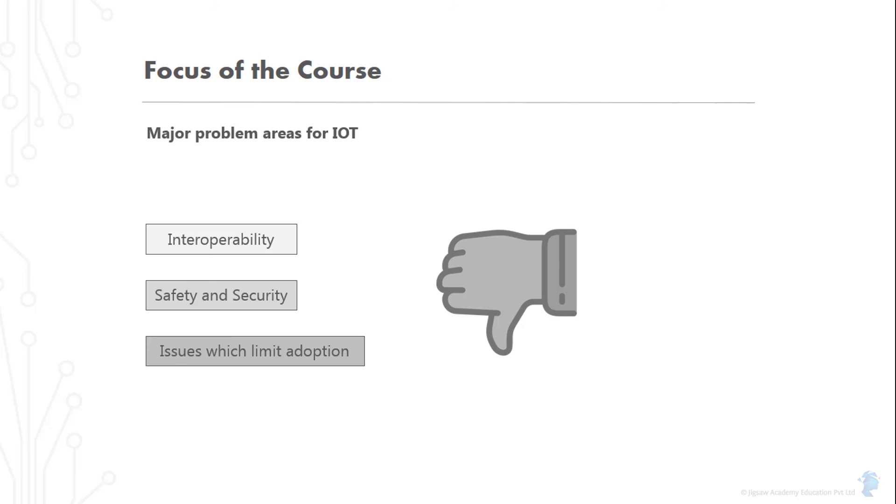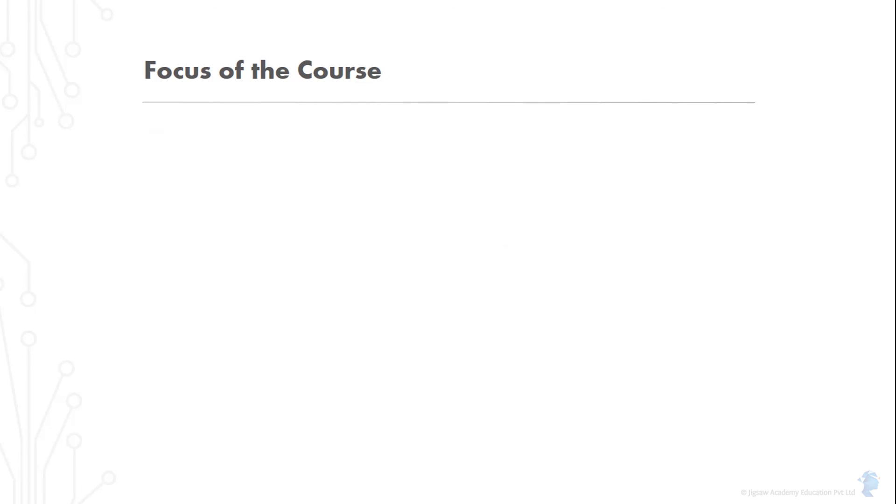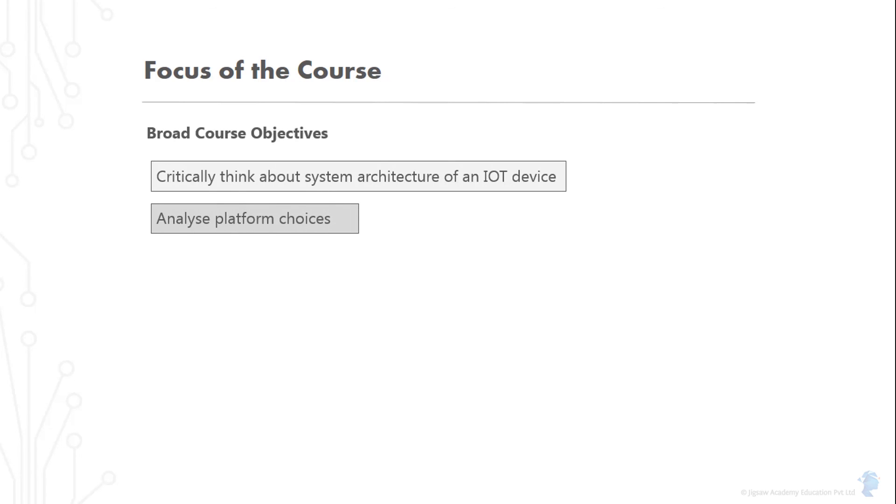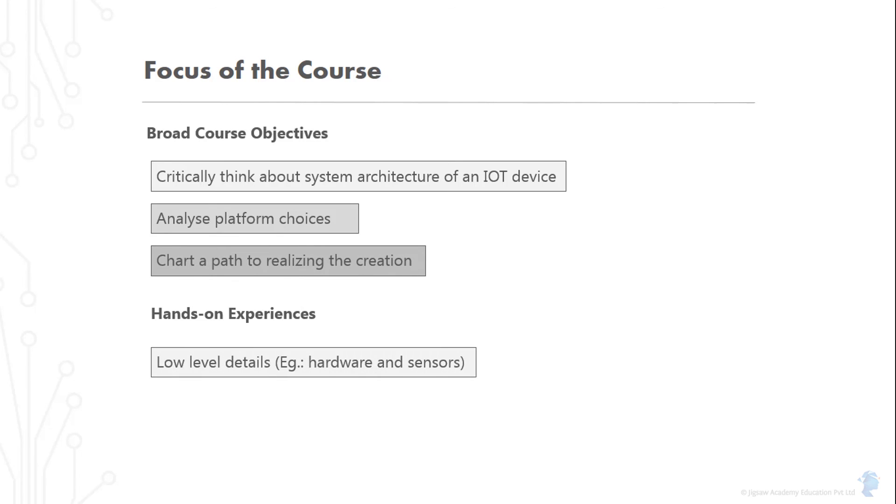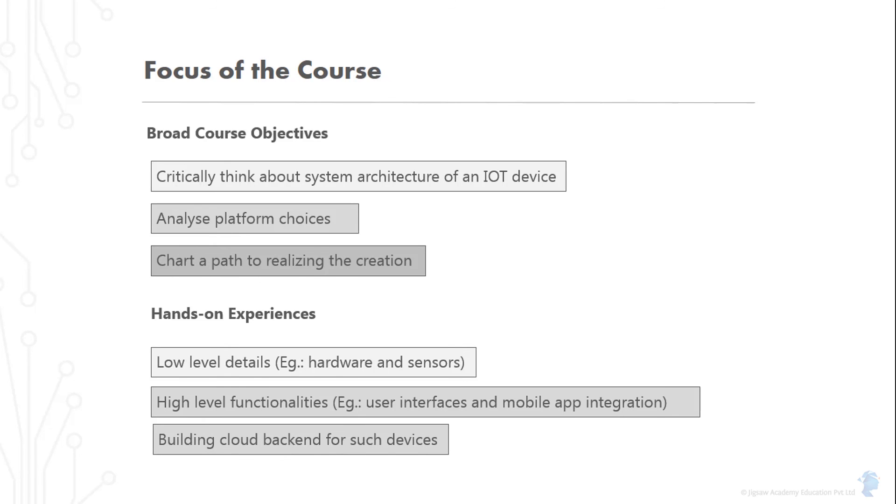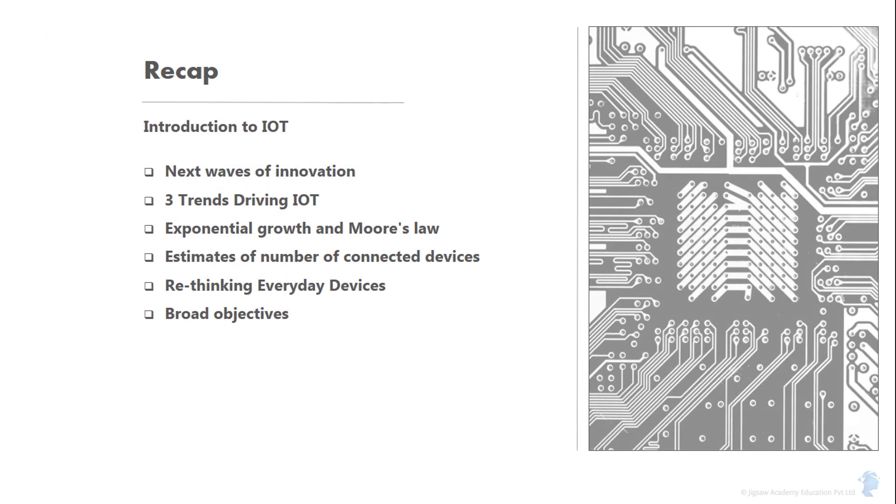By the end of the course, you will know enough to think critically about system architecture for an IoT device, analyze platform choices given the device's functionality and chart a path to realizing it. You would have sampled every aspect of an IoT system from very low level details such as hardware and sensors to higher level functionality such as user interfaces and mobile app integration to building cloud backends for such devices. We have an exciting journey ahead of us. So let's get started.